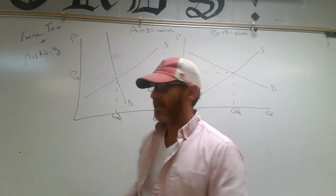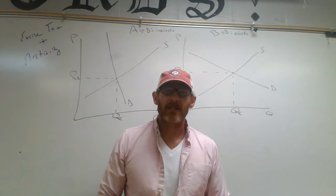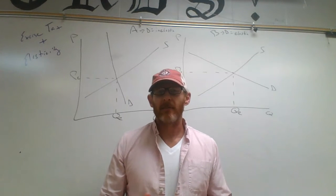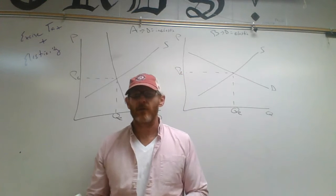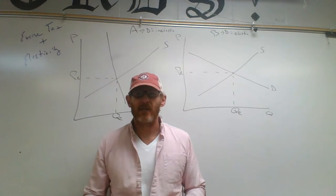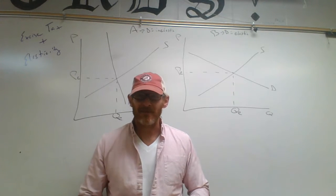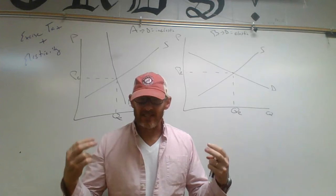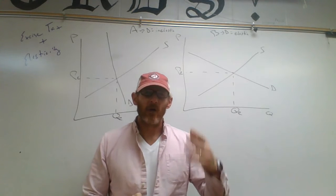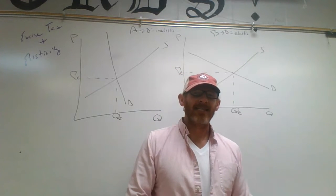I want to talk about excise taxes and elasticity. Excise taxes are taxes that are extra taxes put on goods and services. The reason why the government chooses to put excise taxes on goods and services tends to be due in large part because of the elasticity, or in this case the inelasticity, of these goods. Goods that have excise taxes are sometimes nicknamed sin taxes — like alcohol, tobacco, or gas. These are additional taxes on top of federal and state taxes, which we call an excise tax.